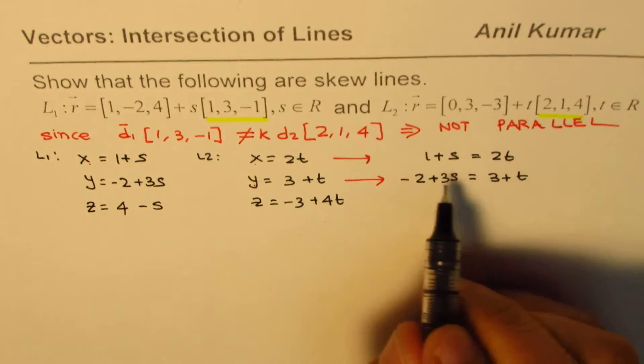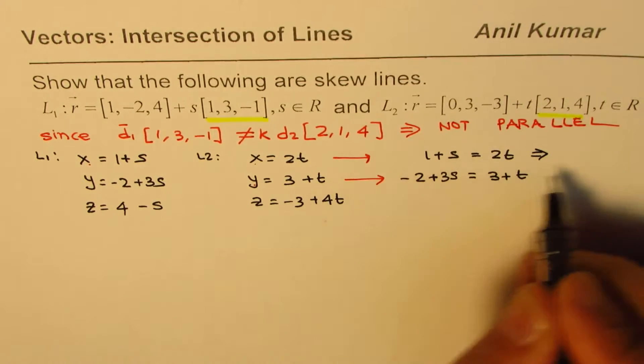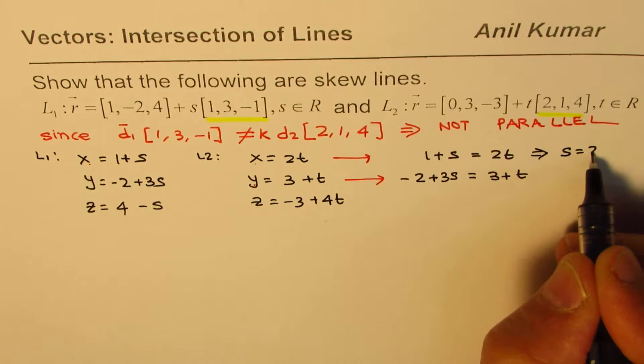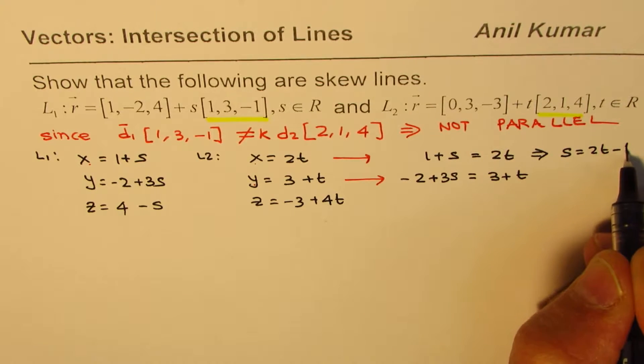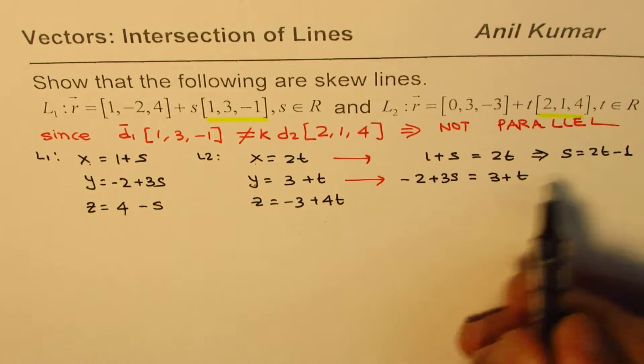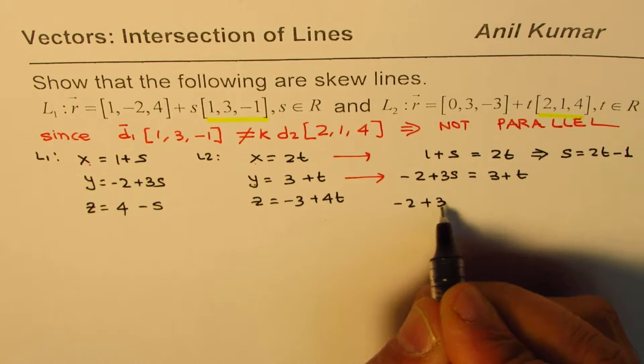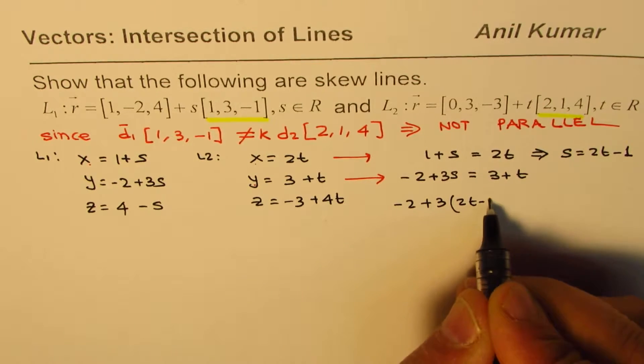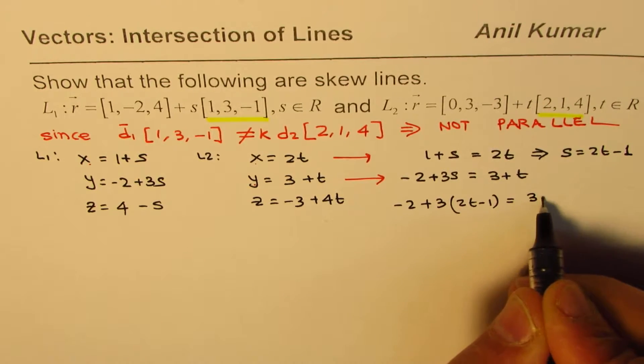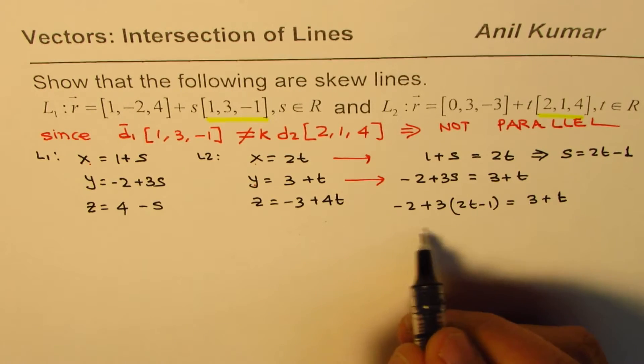From here we can say that s equals 2t minus 1. Now we'll substitute this value here so we get minus 2 plus 3 times (2t minus 1) equals 3 plus t.